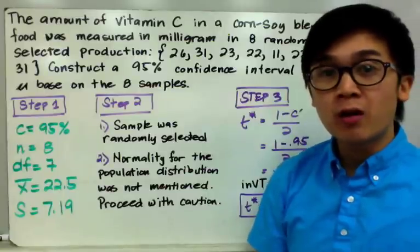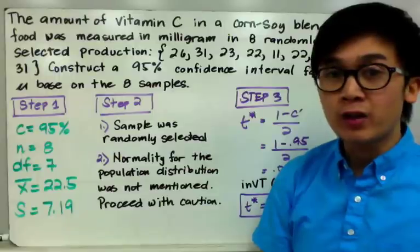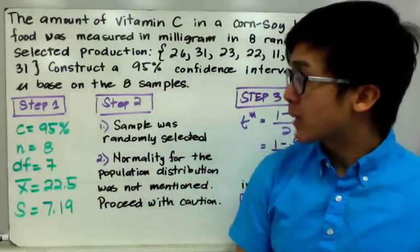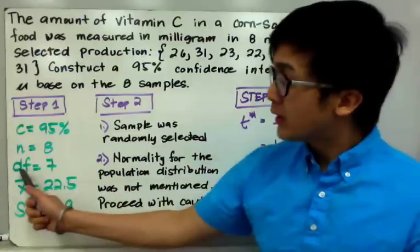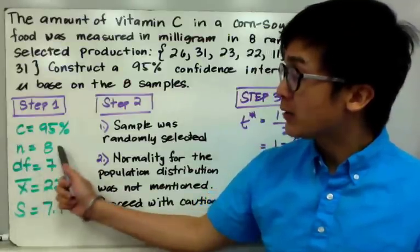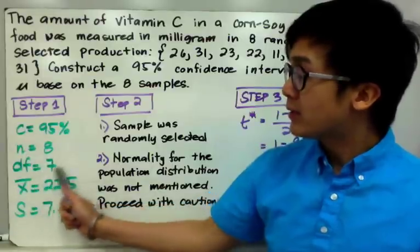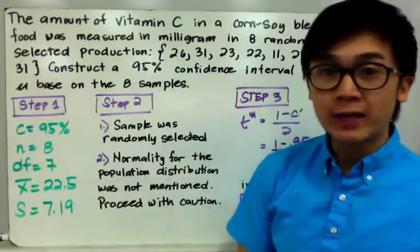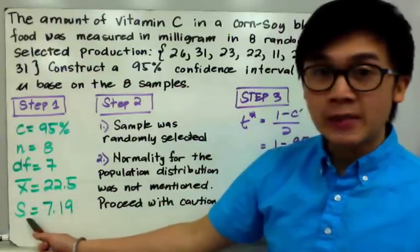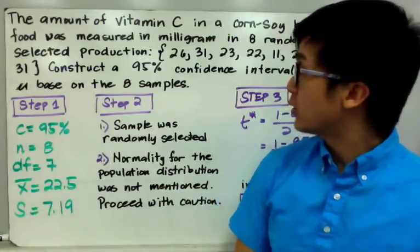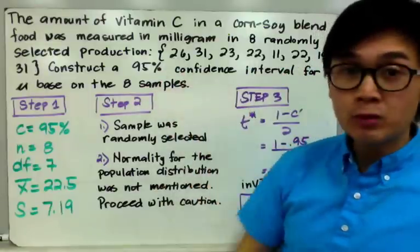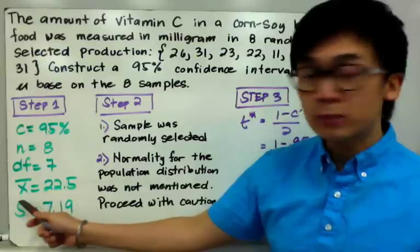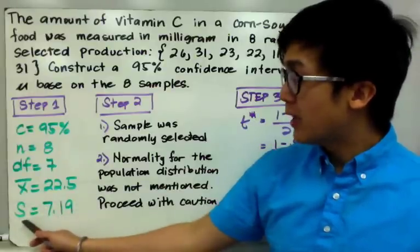For step 1, we determine all the numerical values needed. The confidence level is 95%, the sample size is 8, and the degrees of freedom is 7 — found by subtracting 1 from the sample size. The degrees of freedom are important for computing the critical value in step 3. Using a calculator with one-variable statistics, we get a sample mean x̄ = 22.5 and sample standard deviation s = 7.19.